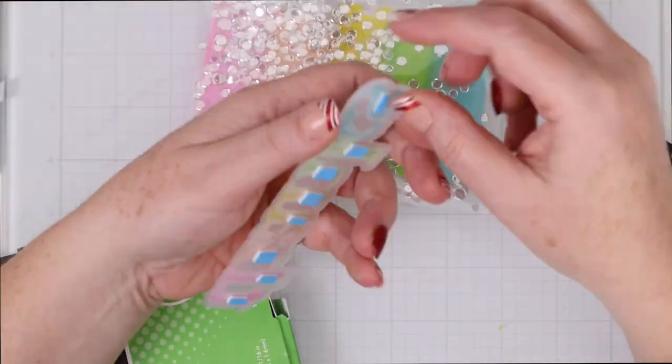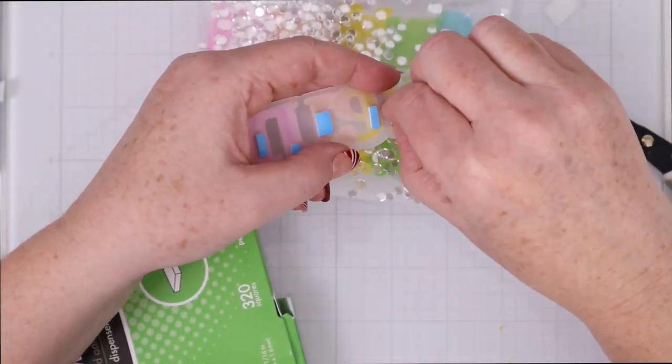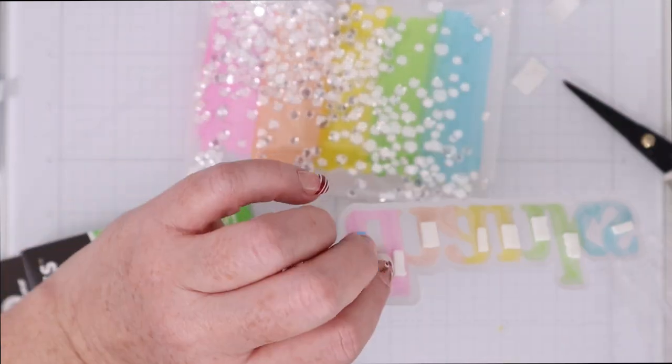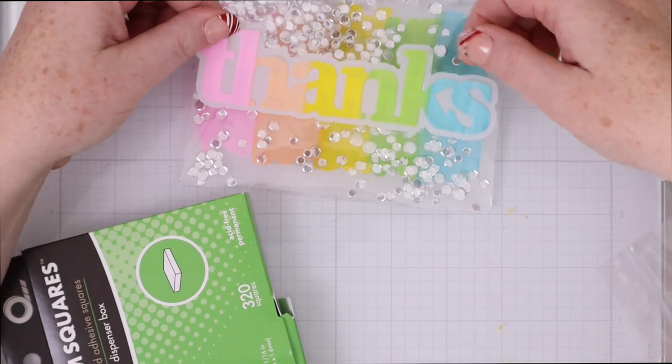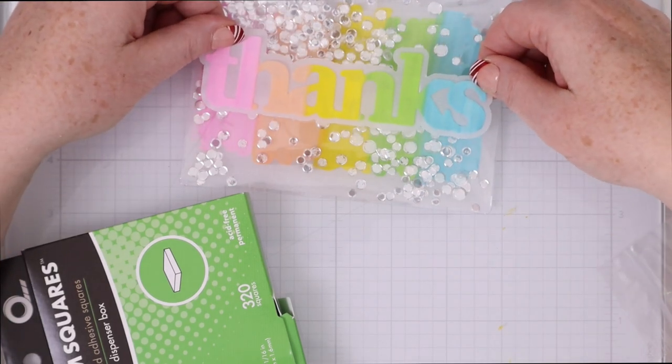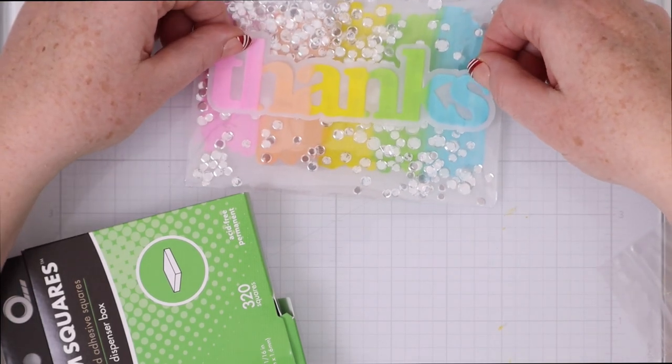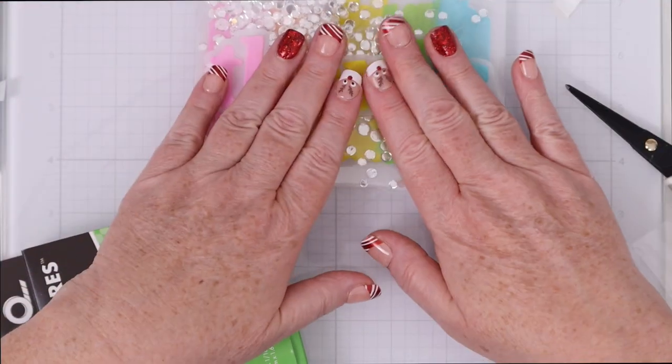And then I'm going to use little bits of white foam squares behind the colored letters you won't see it I promise and then pull off those protective layers off the foam square and just lay it right on top there where the pink matches up with the pink all the way to the blue matching up with the blue.